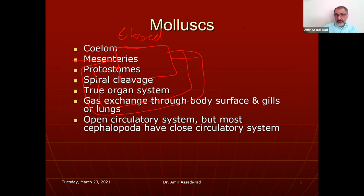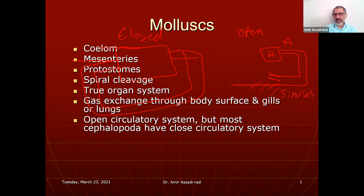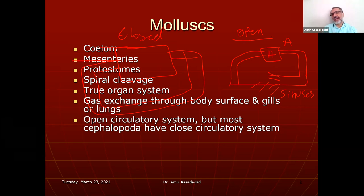In an open circulatory system, the organism has a heart and arteries that take blood away. The arteries eventually empty into a set of sinuses — openings we call sinuses. The blood from the sinuses then goes back into the vein and into the heart.